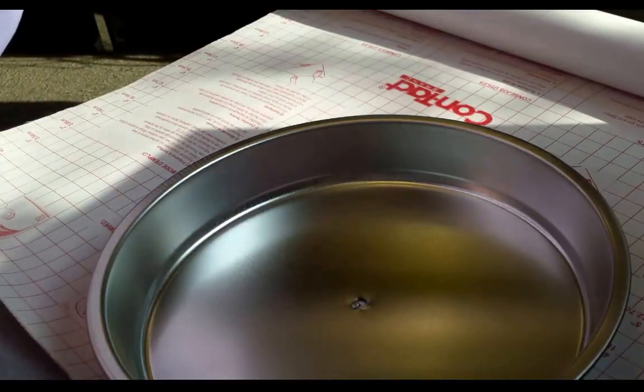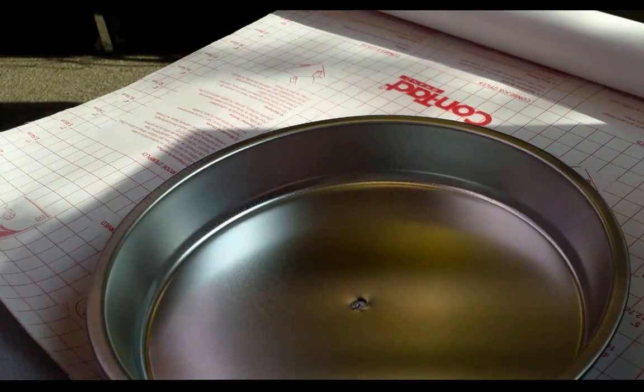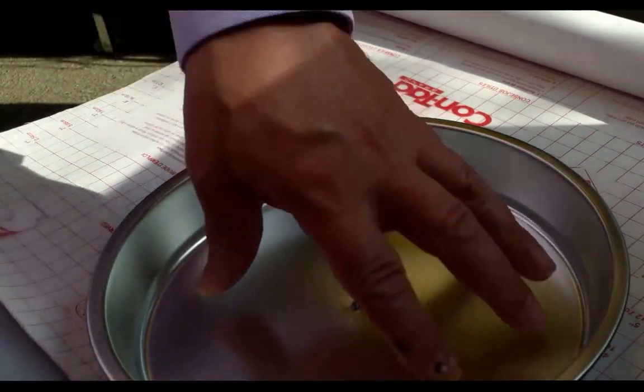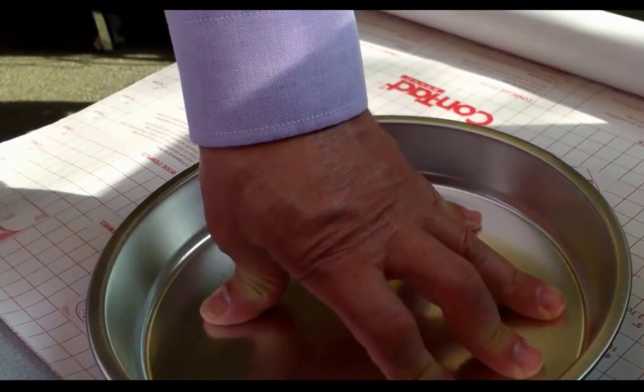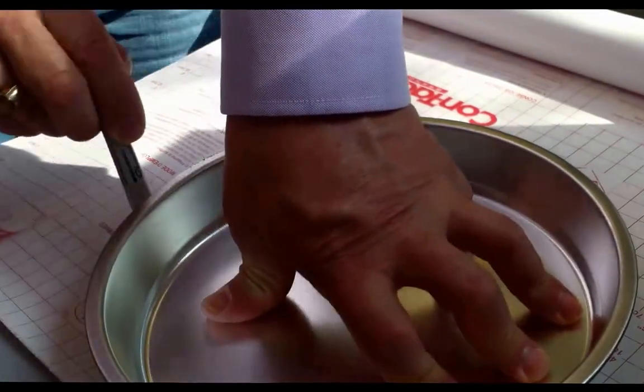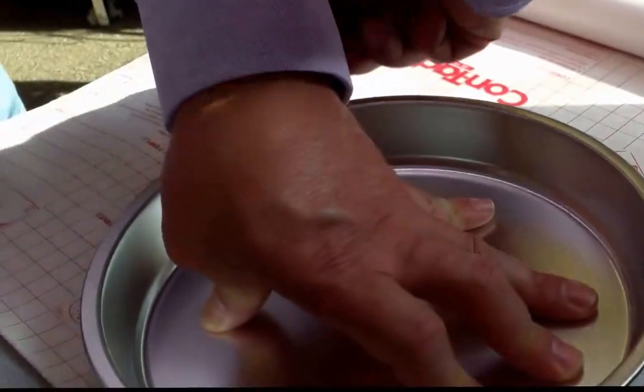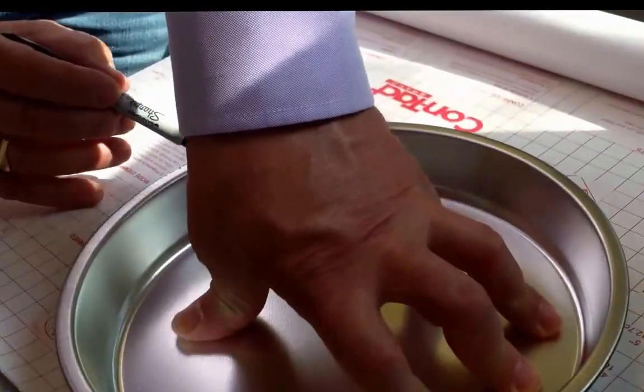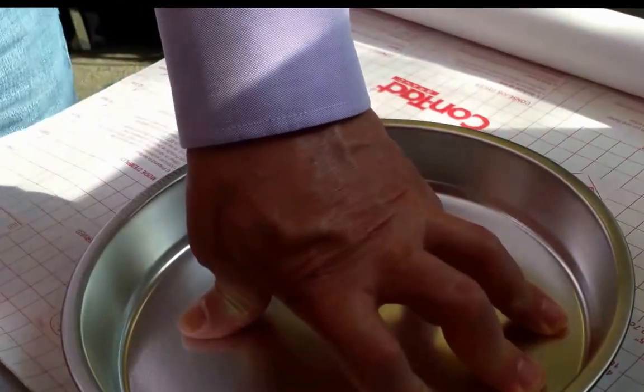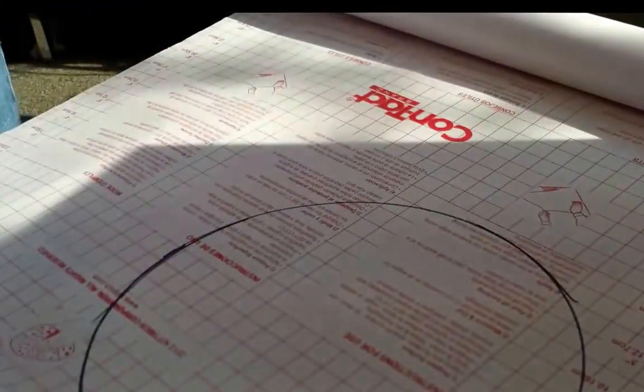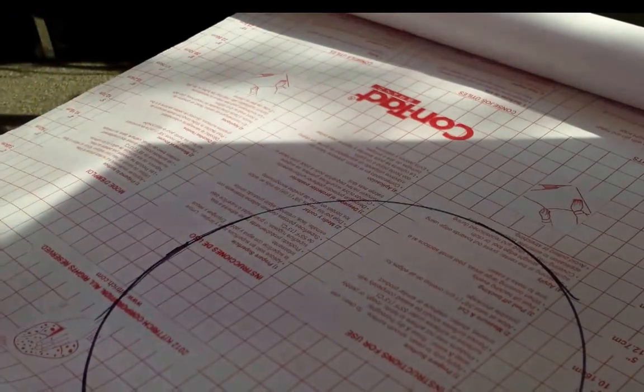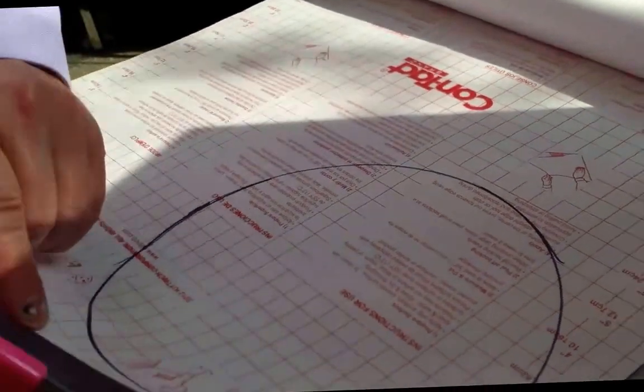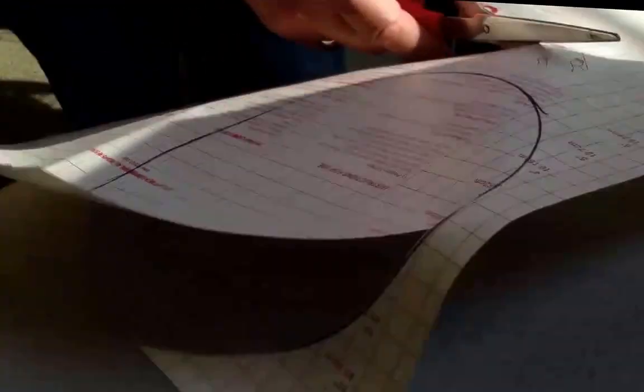So normally a Secchi Disc has four quadrants, two white ones and two black ones, at least the ones we use. So what you first want to do is get a circle of white, so you can just trace around the bottom, the black bottom of this lovely cake pan.